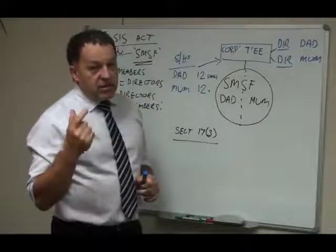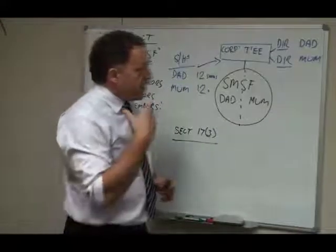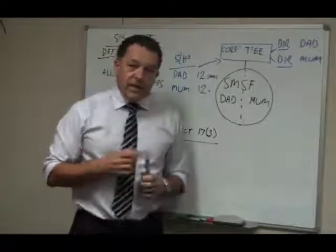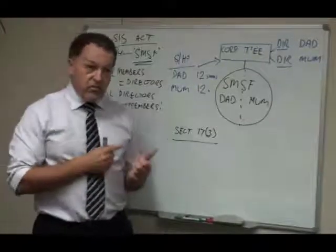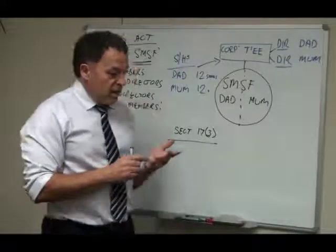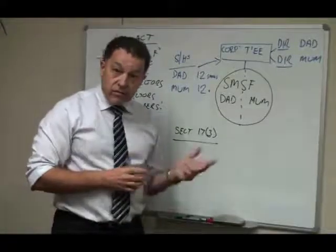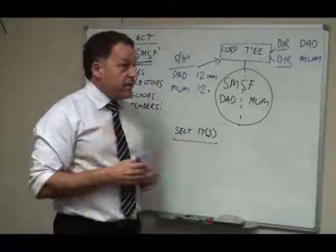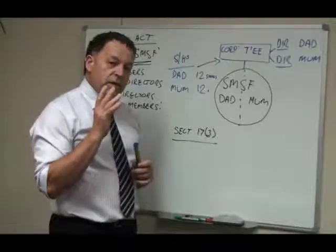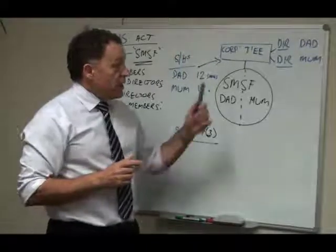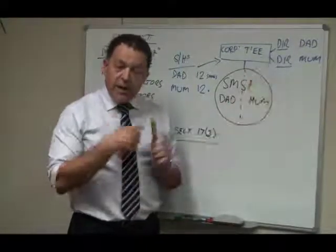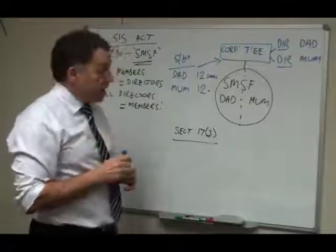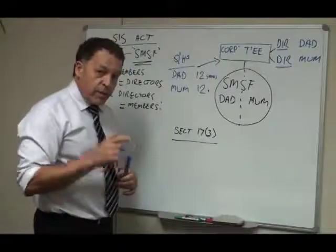Now let's consider the situation that the possibility is that either Mum or Dad may be becoming incapacitated. They might have had a stroke, they might be getting old, they may be planning to leave the country for a period of time. There's a host of reasons why either Dad or Mum may not be in the position to be able to continue to be the director of this company or may not be capable of carrying on that role. So what do we do about it?